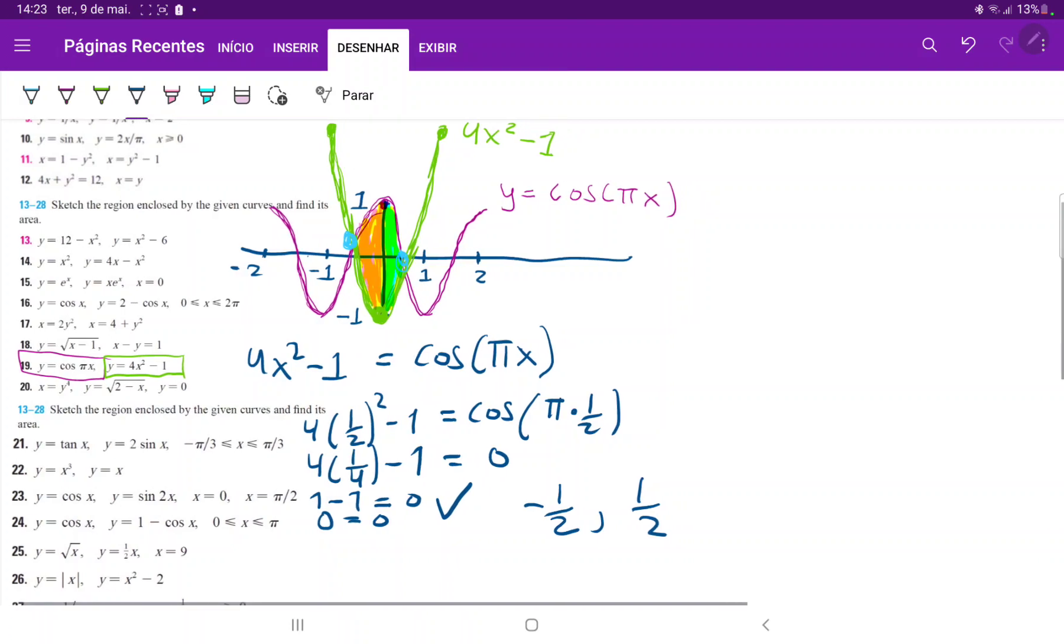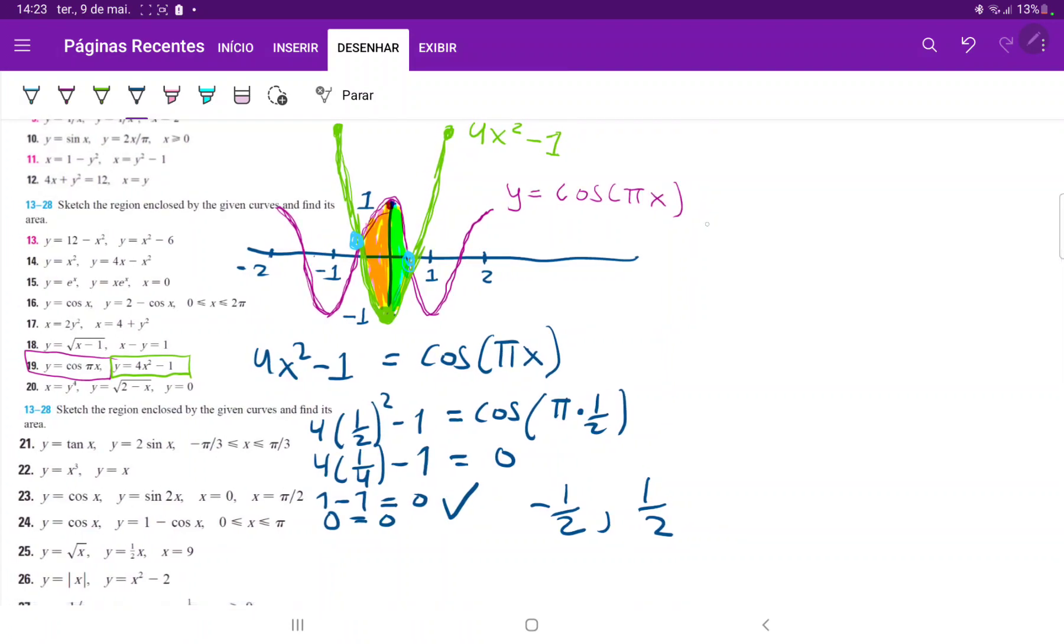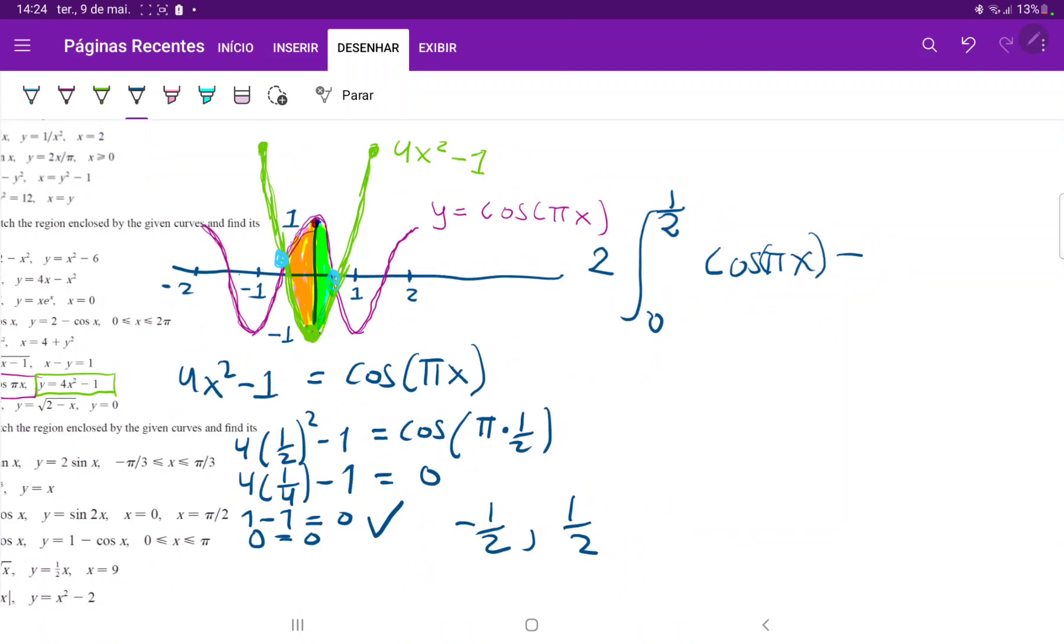To make our lives easier, we're going to express this as 2 times the integral from 0 to 1 half, because we're just doubling the area from 0 to 1 half. Then we have the upper curve minus the lower curve. So the upper curve is cosine of πx minus the lower curve, which is 4x² minus 1, all times dx.